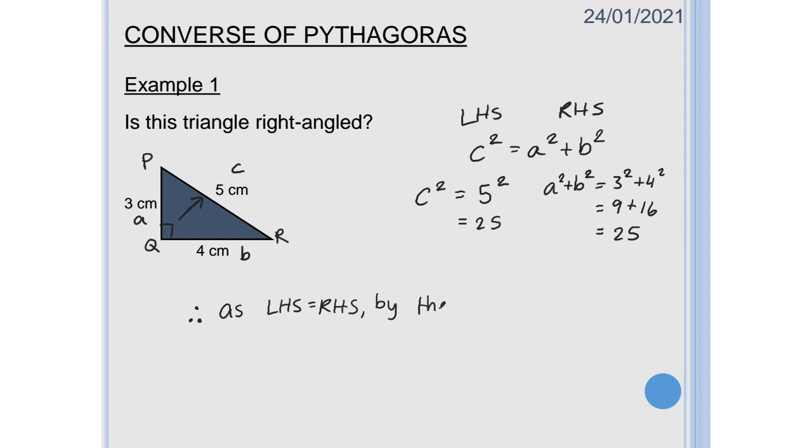by the converse of Pythagoras triangle PQR is right angled and that's the statement we're looking for. We're not looking for a paragraph, we're looking for that statement.